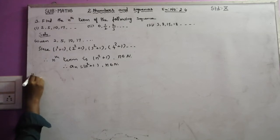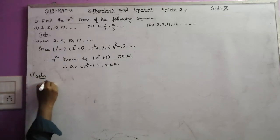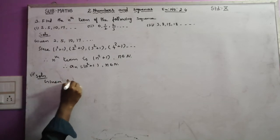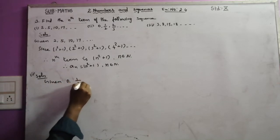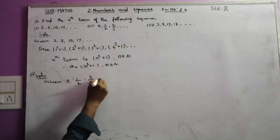Next is the second solution. Solution. Given: the sequence is 0, 1/2, 2/3.